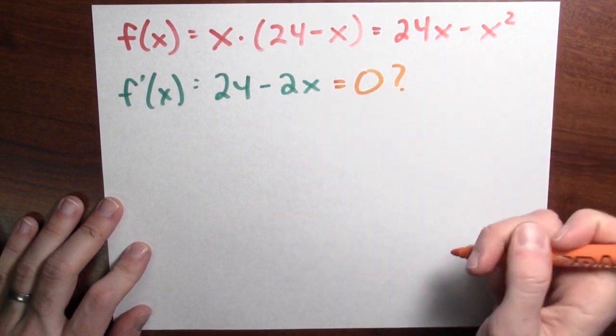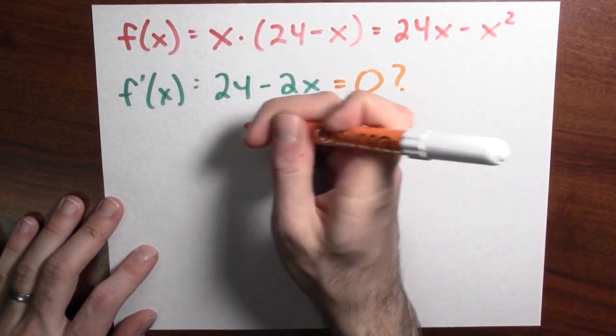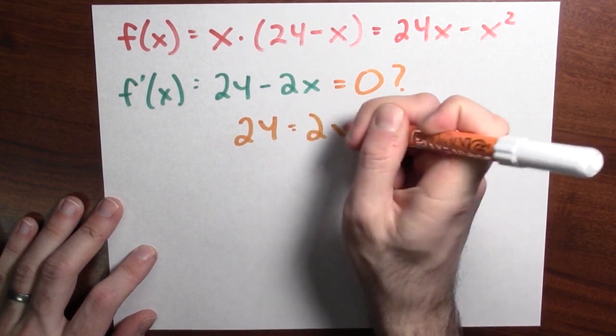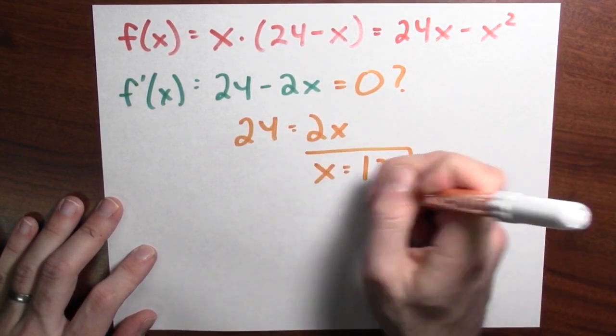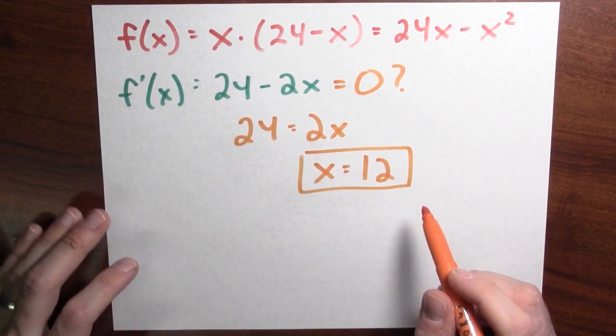But I do have to find places where the derivative is equal to 0. So when is this thing equal to 0? Well, that's the same as asking when 24 is 2x. That's exactly when x is 12. So here is my critical point.